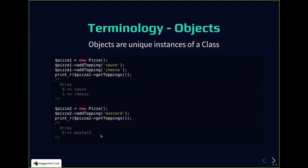An object is an instance of a class. We can create a new pizza by saying 'new pizza', and then start performing actions, tasks, or retrieving data from that object — like adding toppings to the pizza. Objects are separate from each other, so if I create a pizza here as a new instance of the pizza class, I can do it again and pizza number two is totally different.